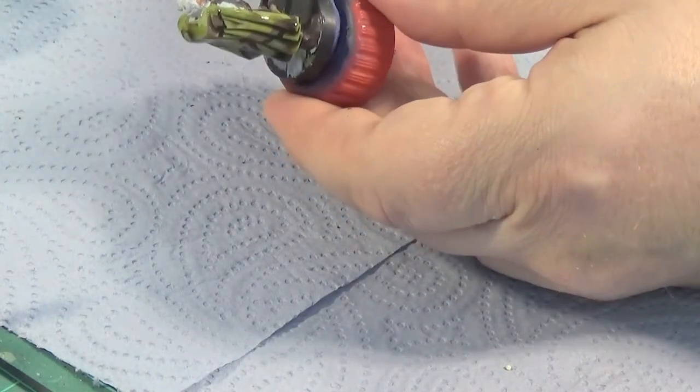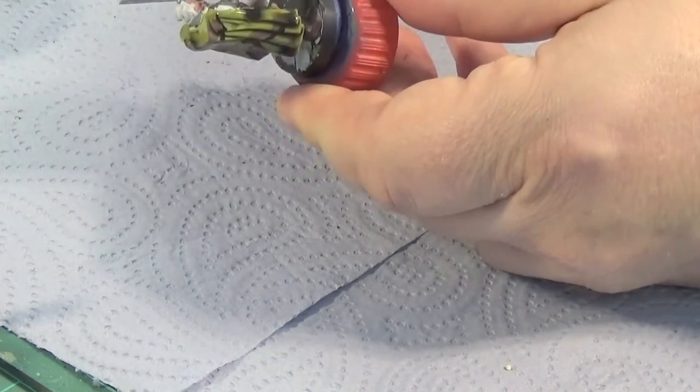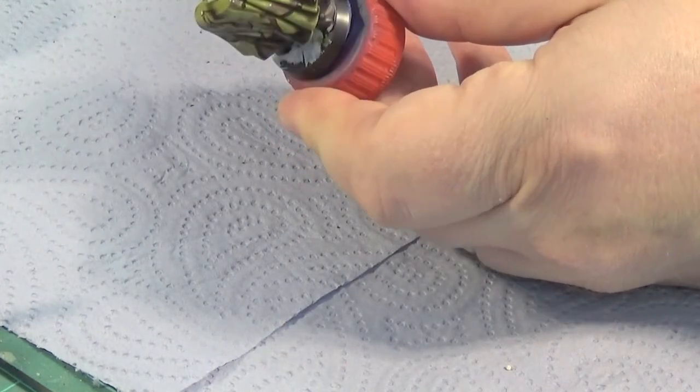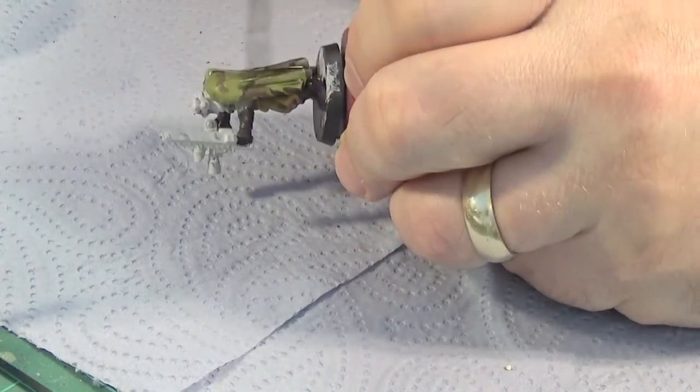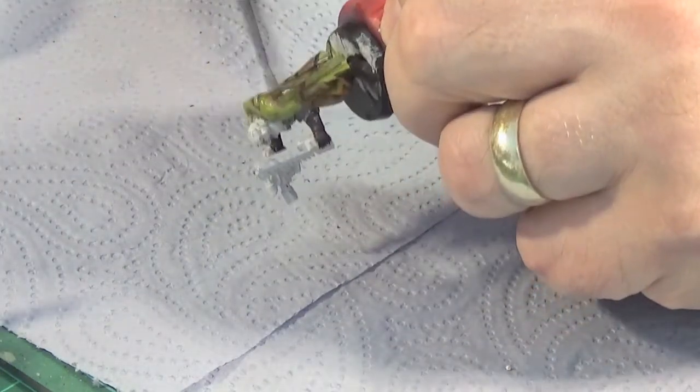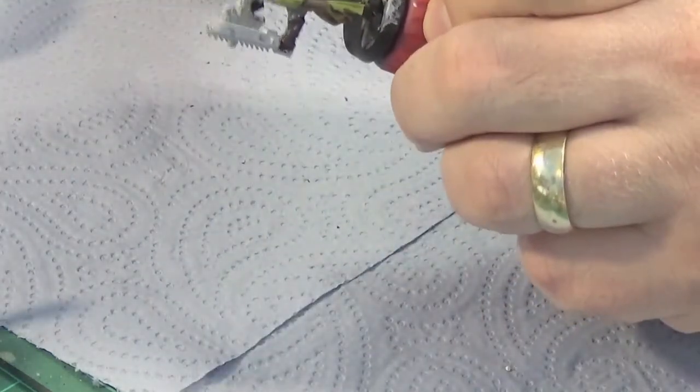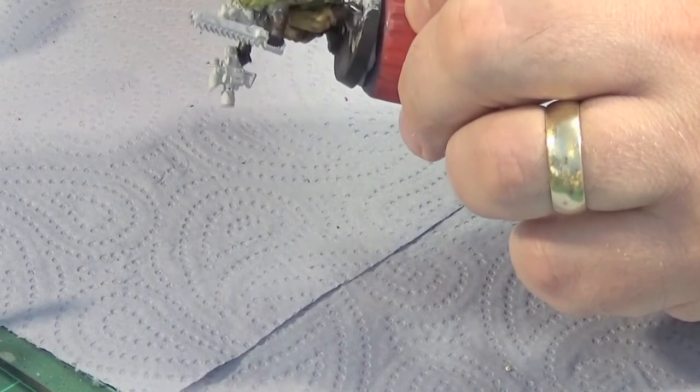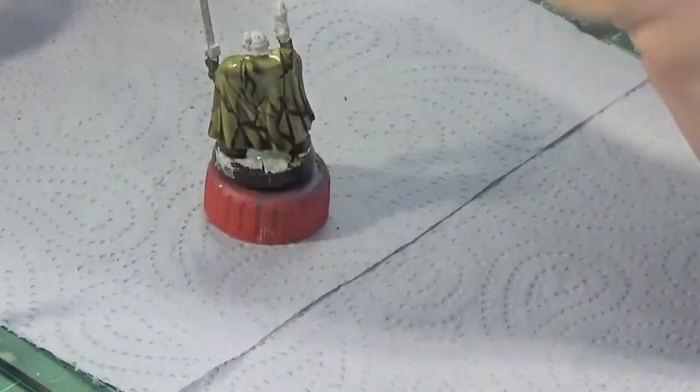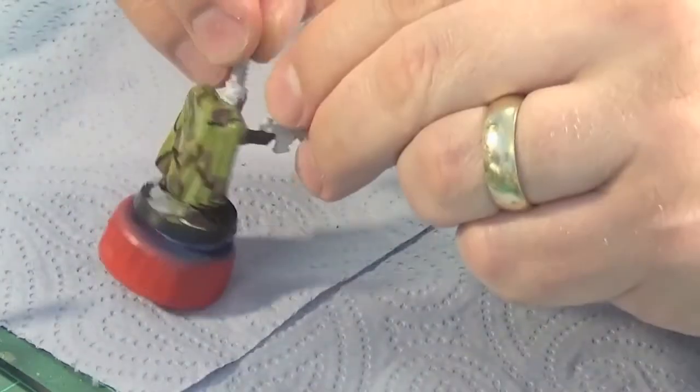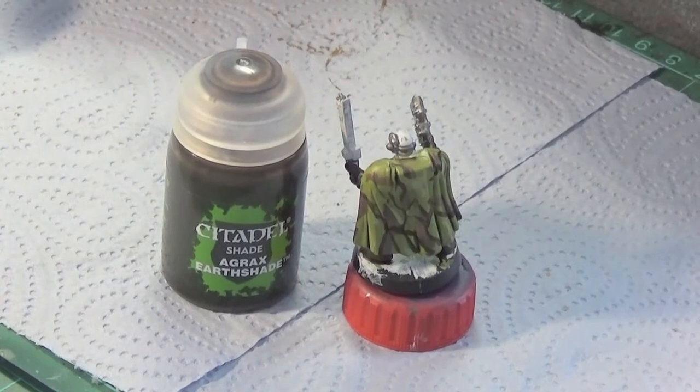Yeah, so just slather this all over, but don't let it pool too heavily in the folds at the bottom. So be mindful of that. Use whatever technique you prefer when you're doing the shading on cloaks, because it can be problematic if you let it pool too heavily. So I'm just dabbing it up. At one stage I rest it sort of horizontally. Yeah, so just like that, really.